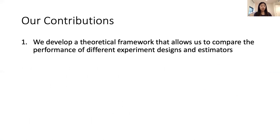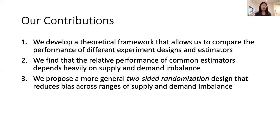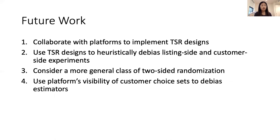To sum up: in this work we created a theoretical framework that allows us to compare the performance of different experiment designs and estimators. We find that the bias in these different estimators depends heavily on supply and demand imbalance — the economic conditions in the marketplace — and that there are very intuitive economic reasons for why this happens. Using these insights, we propose a more general two-sided randomization design that reduces bias across a range of supply and demand imbalance. There's a lot of future work to be done: collaborating with platforms to implement these designs, using two-sided designs to heuristically de-bias one-sided experiments, and exploring broader classes of two-sided experiments.